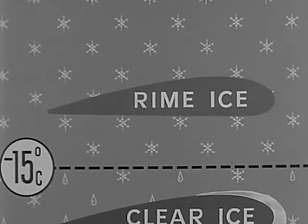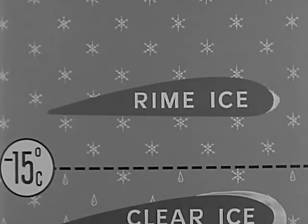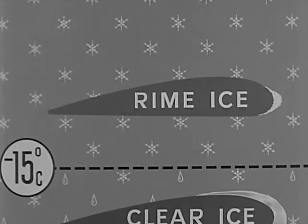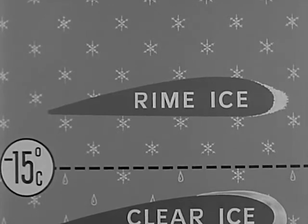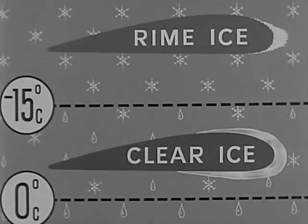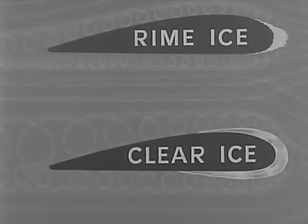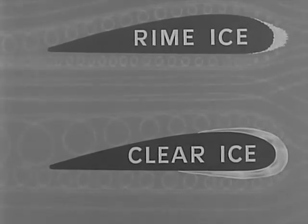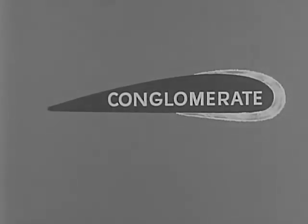Rime ice is somewhat less dangerous than clear ice since it accumulates more slowly and is easier to dislodge. It forms at lower temperatures where the water droplets are smaller and less numerous. Each droplet that strikes the aircraft freezes before another strikes on top of it. The resulting accumulation will be in the form of tiny pellets frozen together in a spongy mass. Rime ice usually forms a sharp, protruding ridge, which does not affect the flow of air as extremely as a clear ice formation does. Very often, the ice that forms will be a combination of rime and clear — an irregular conglomerate forming a rough, blunt mass which can build up to serious proportions.